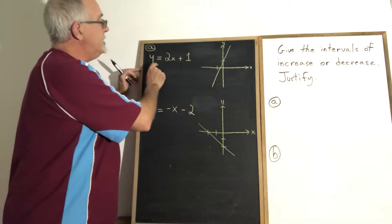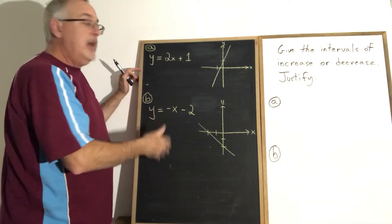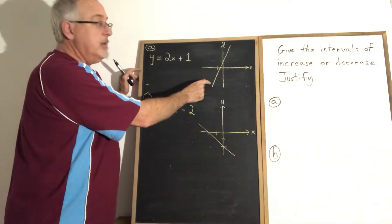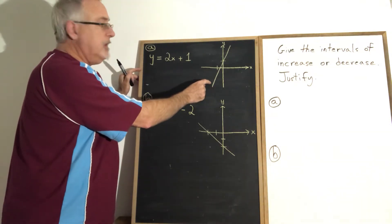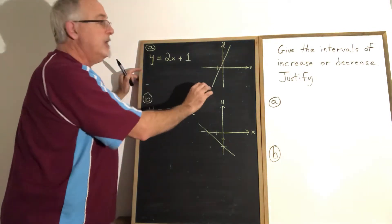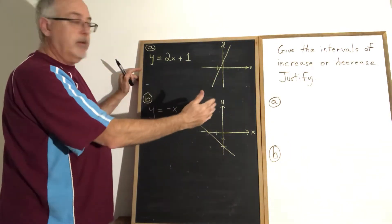In the case of this first example, y equals 2x plus 1, if I create the graph, I get a line that looks like this. It becomes apparent quickly that this is always increasing. It's always climbing as I look at it moving from left to right.